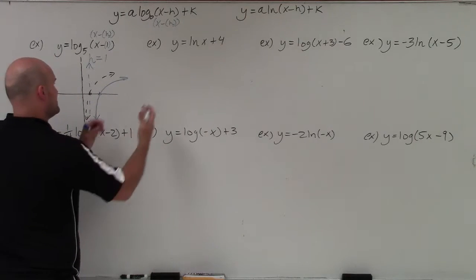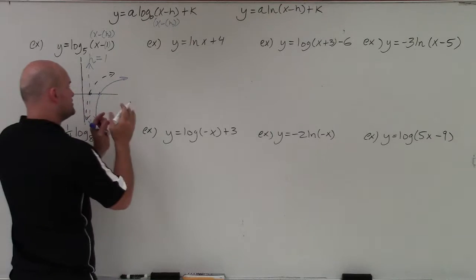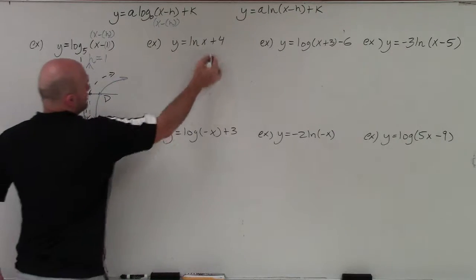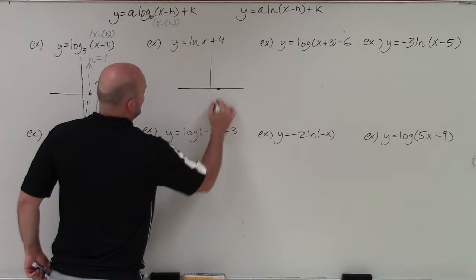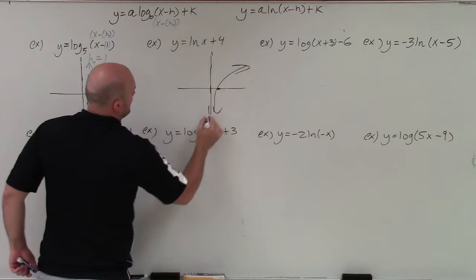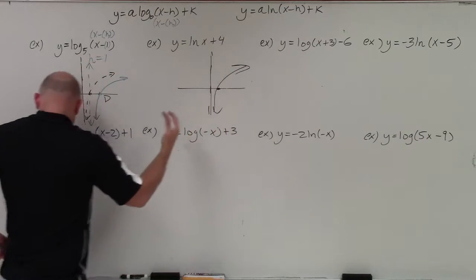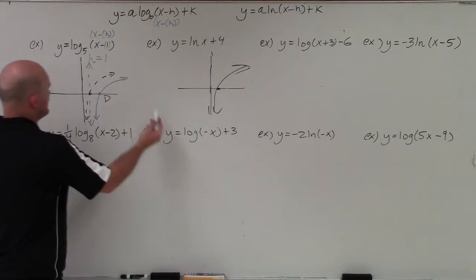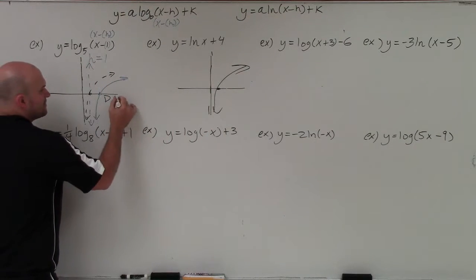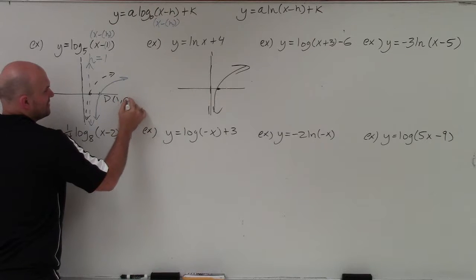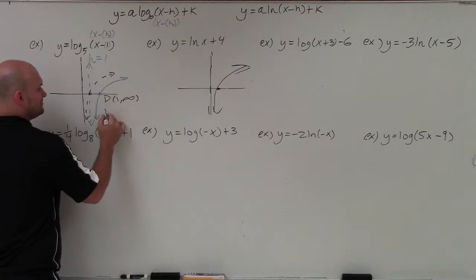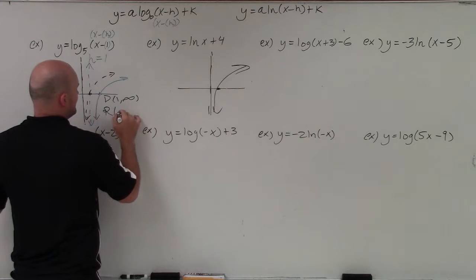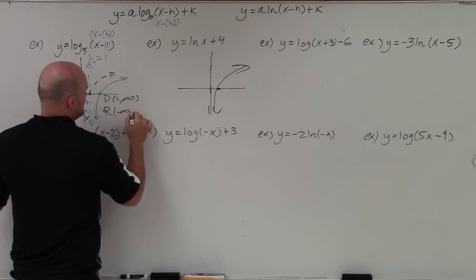That's very important because shifting the asymptote changes our domain and range. The domain is the set of all x values. In the standard form, the asymptote was at 0, so the graph went as far left as 0. Now, with the shift, the farthest left the graph goes is positive 1, and it goes to infinity on the right. So the domain is (1, ∞). The range still goes from negative infinity to infinity.